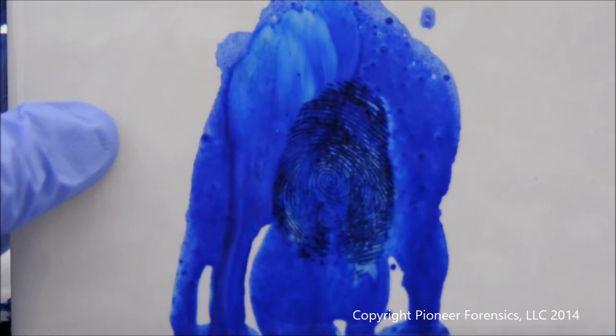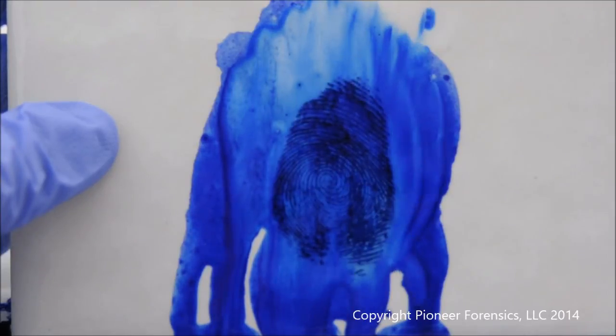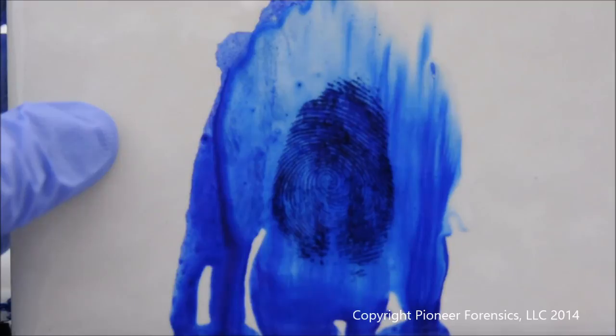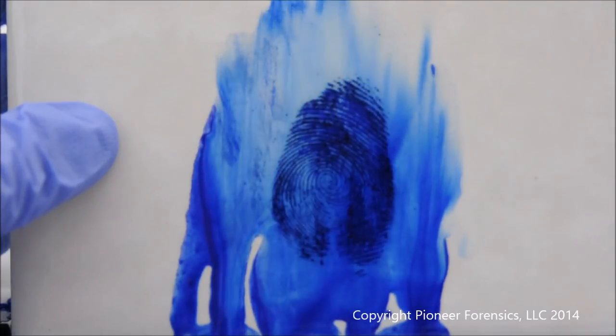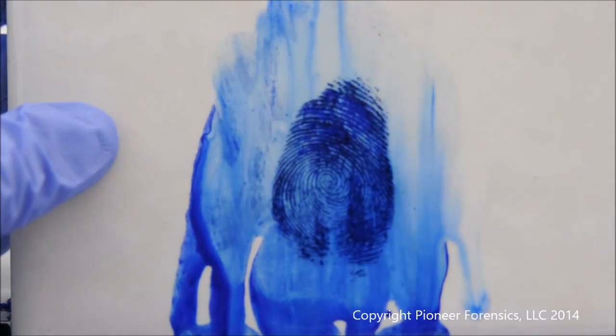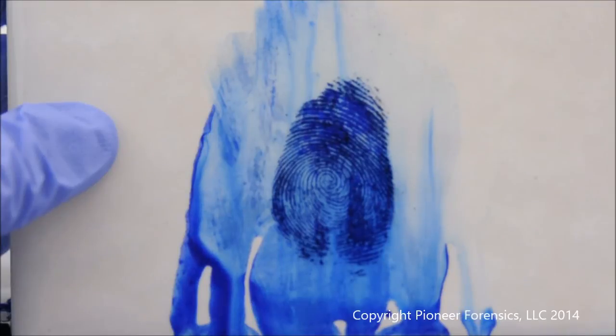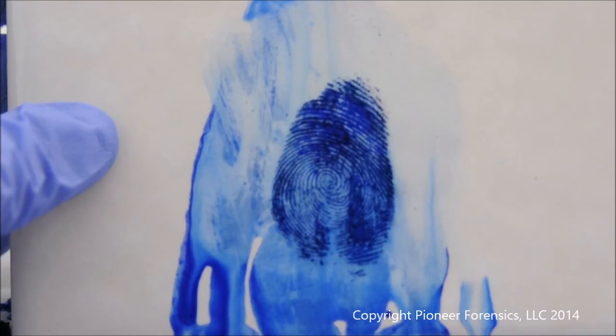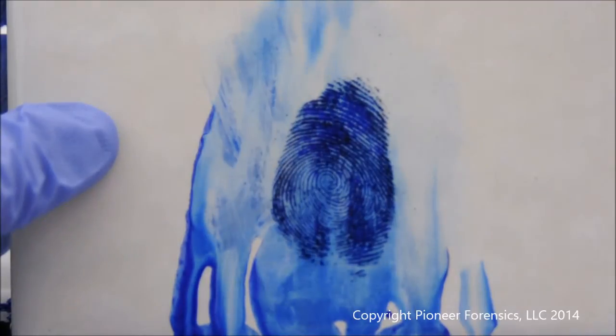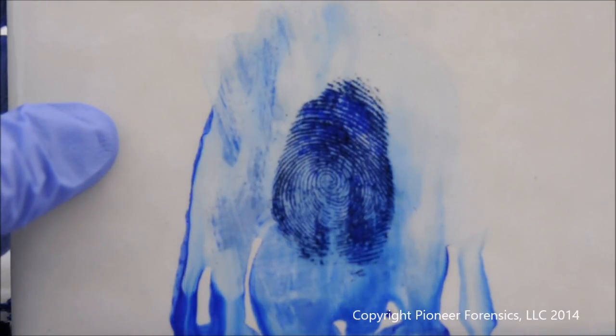So when we get to the rinsing part, even though a majority of the stain is completely rinsed away, where it's making contact with your bloody evidence, that will remain permanently stained. And if you look closely to the area that was latent before, there's almost better clarity and detail in the areas where it originally started as an invisible item of evidence.